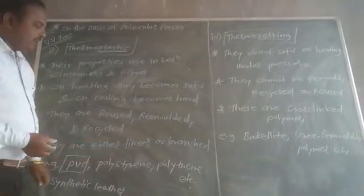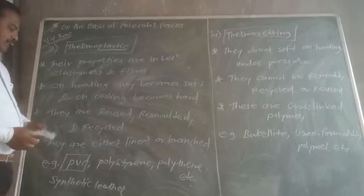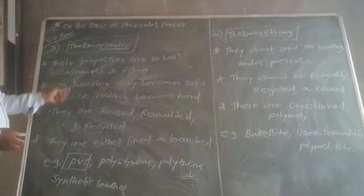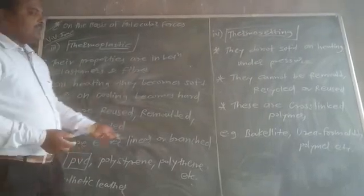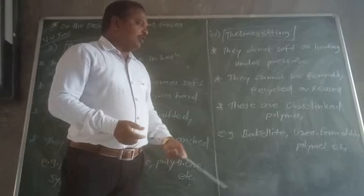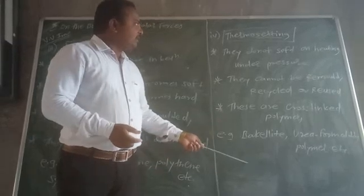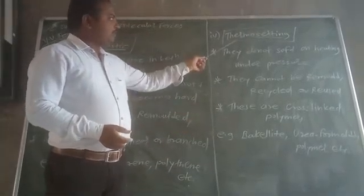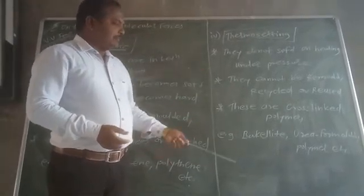PVC, polystyrene, and polythene are examples of thermoplastic polymers, whereas bakelite and urea-formaldehyde polymer are examples of thermosetting polymers.